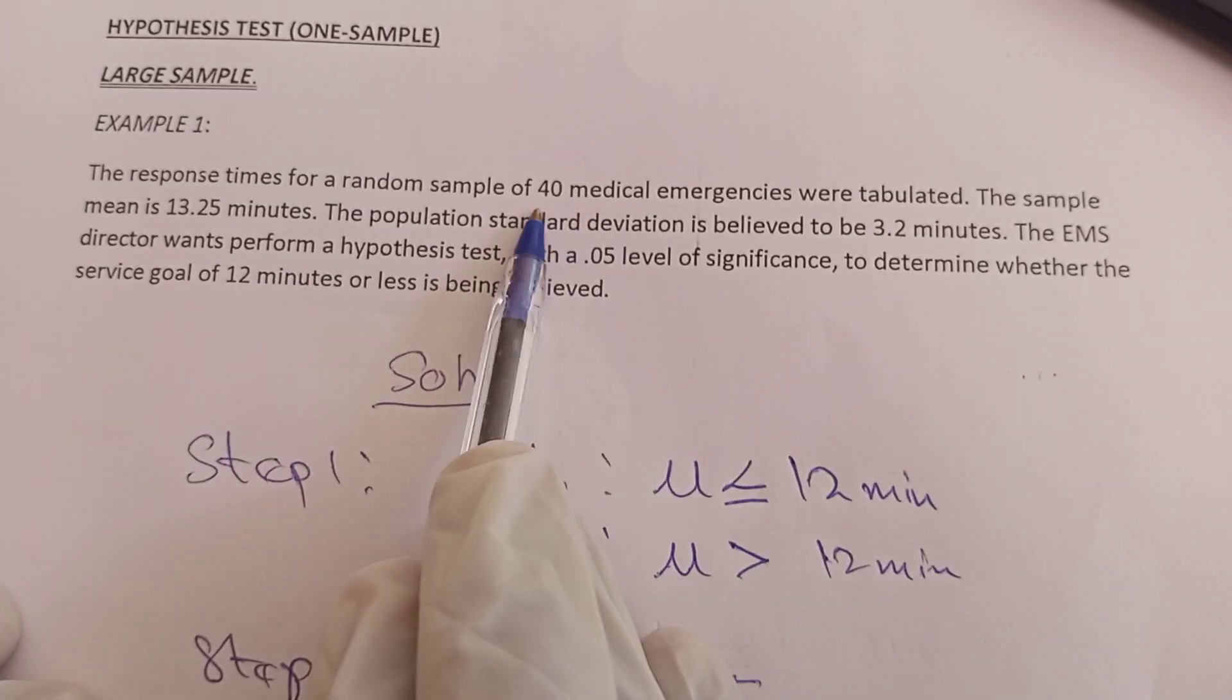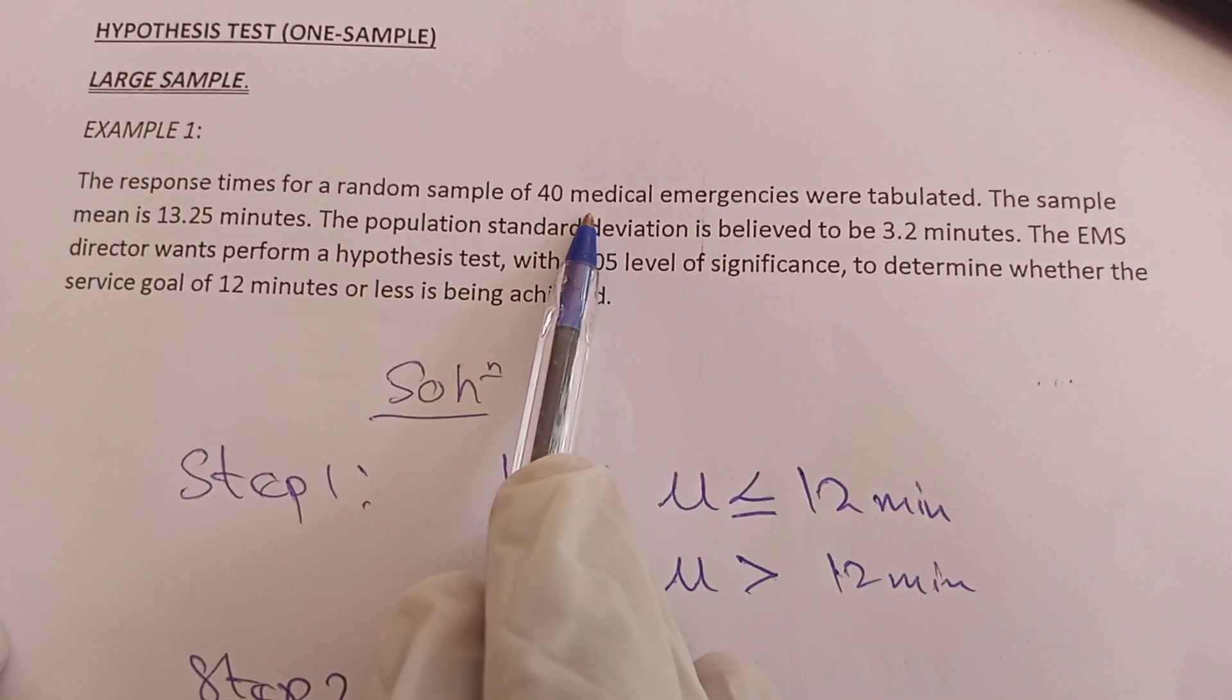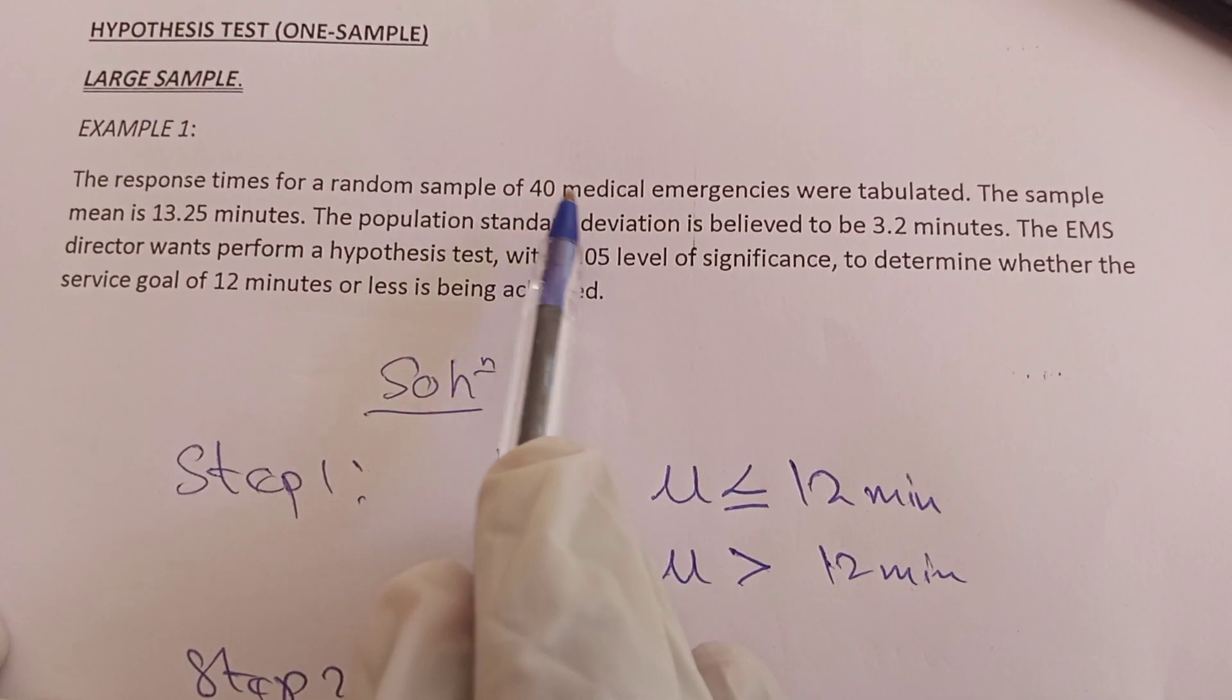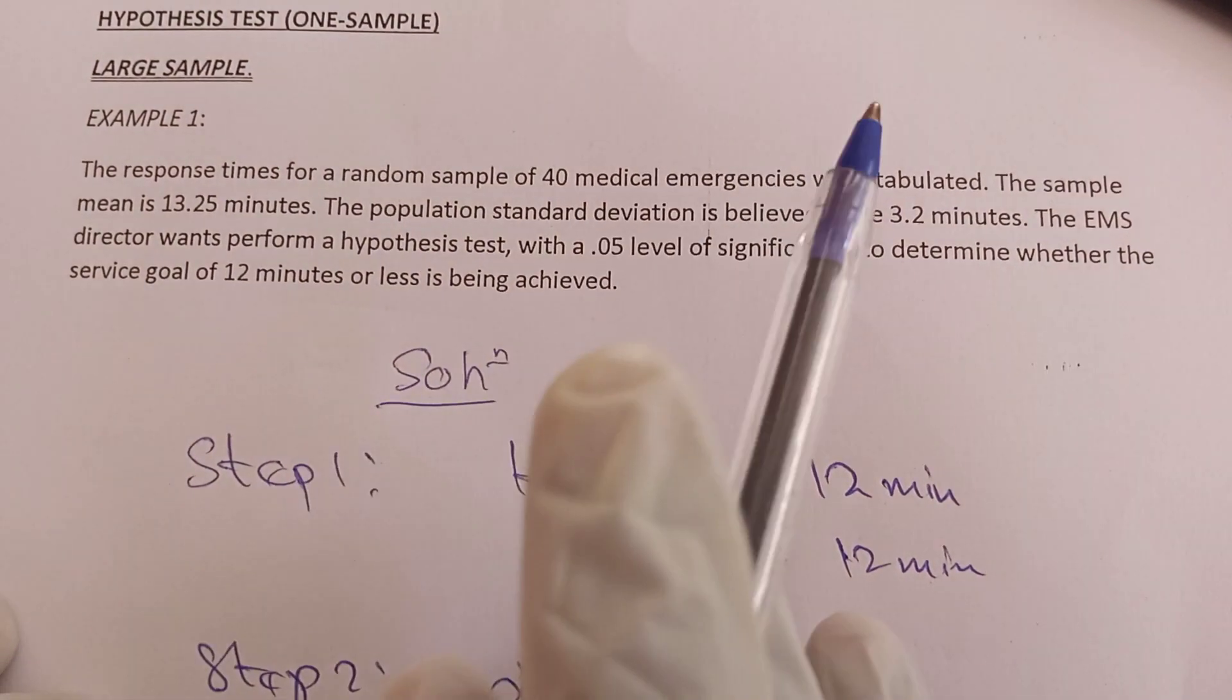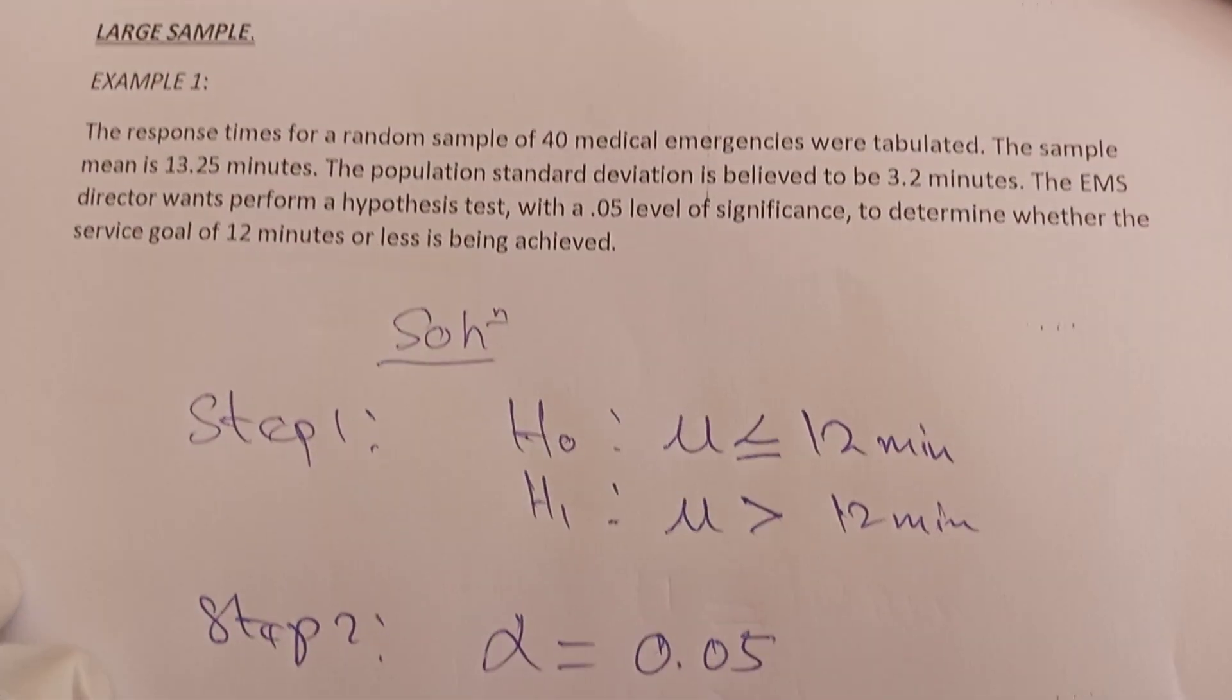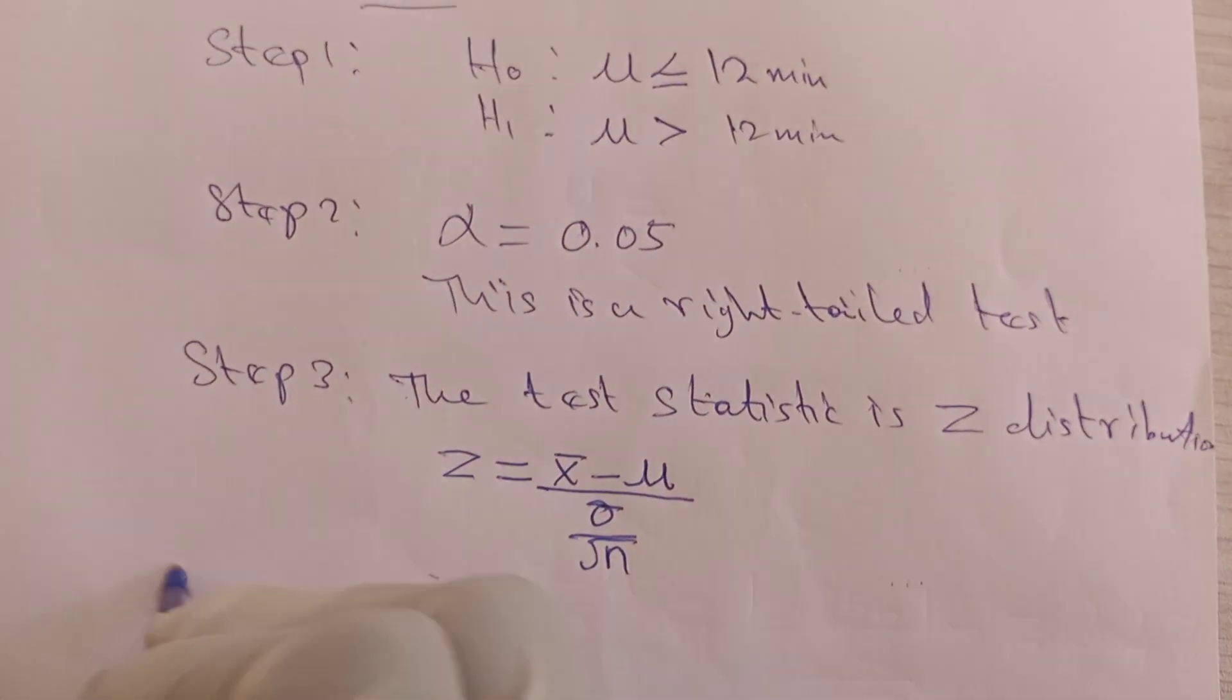How do I know that it's Z? Because it's a large sample. The sample size is more than 30. Whenever your sample size is equal to 30 or more than 30, it's a large sample. This sample size is 40, which is more than 30, so it's Z.